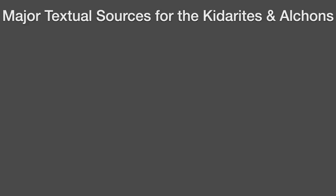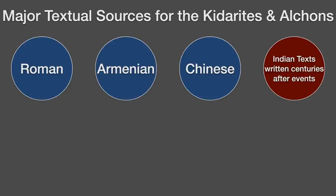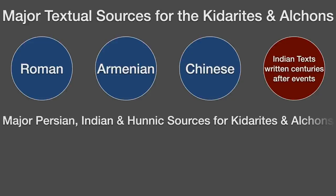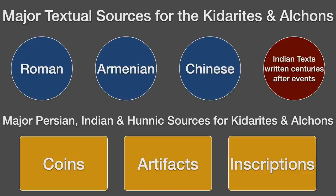The actual evidence we have for these groups is, however, fairly sparse, even by the standards of ancient history. Oftentimes we are reliant on Roman, Armenian, or Chinese textual sources dating to the period — not Persian or Indian sources — or we are reliant on Indian texts which date centuries after the events they describe, and whose veracity has sometimes been called into question. As for Persian, Indian, and Hunnic sources, professional historians and archaeologists are reliant upon coins, some artifacts, and a handful of inscriptions in varying states of preservation. Therefore, there are serious gaps in our knowledge, and much of what is known is open to question, or at the very least, competing chronologies.